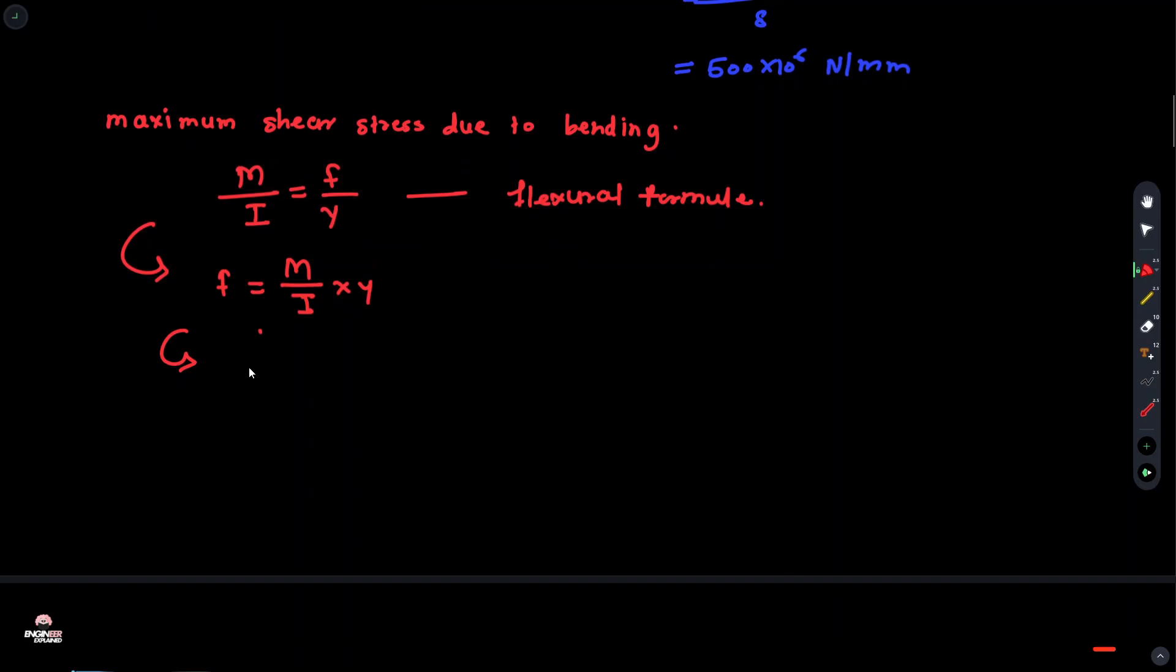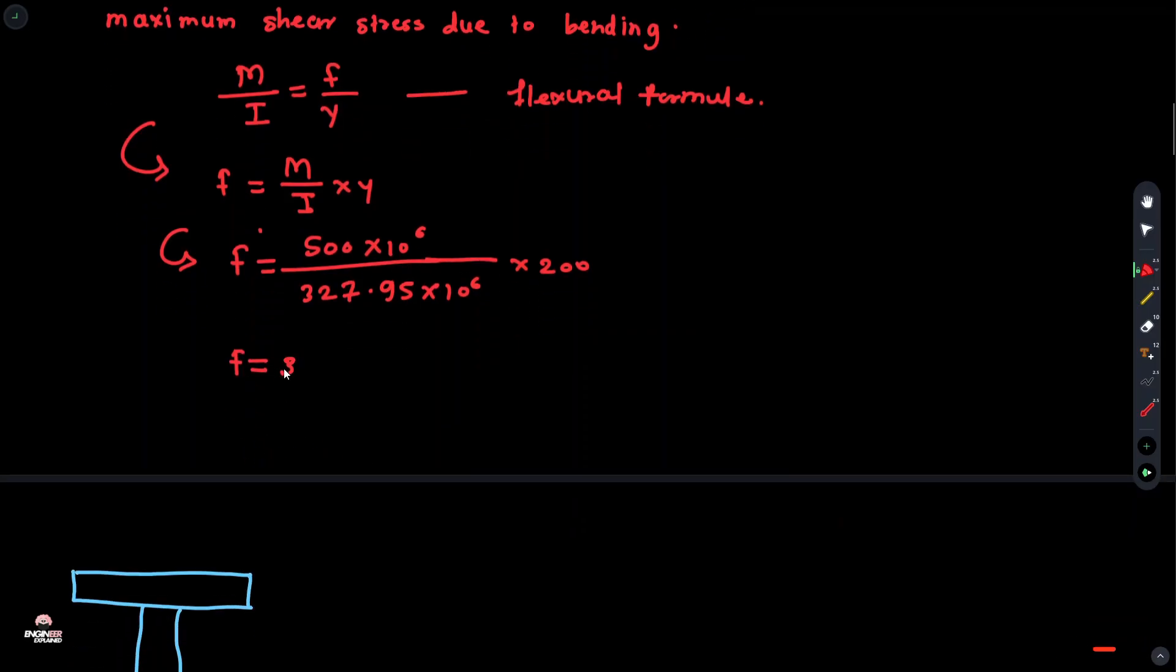Put the value in this. F equals 500 × 10⁶ divided by 327.95 × 10⁶. So F equals 1.52 × 10⁰ multiplied by our Y bar of 200. F equals 304.92 MPa.